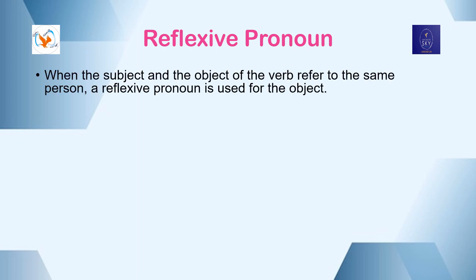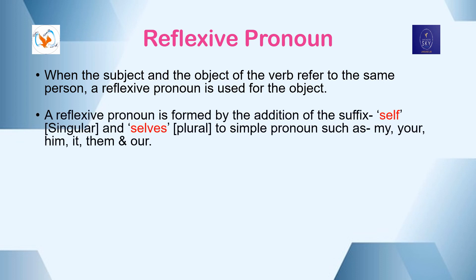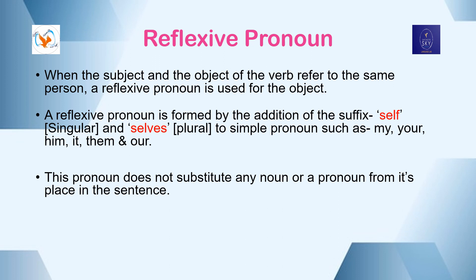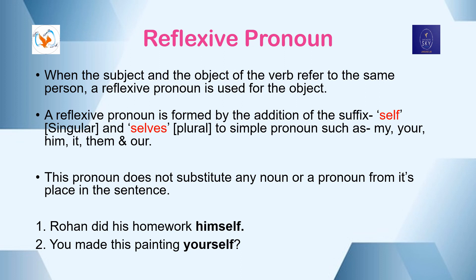Reflexive pronoun: When the subject and the object of the verb refer to the same person, a reflexive pronoun is used for the object. A reflexive pronoun is formed by adding the suffix '-self' to the singular form and '-selves' to the plural form of simple pronouns such as my, your, him, it, them, and our. This pronoun does not substitute any noun or pronoun from its place in the sentence. Observe the following sentences: Rohan did his homework himself. You made this painting yourself. The dog bit itself.